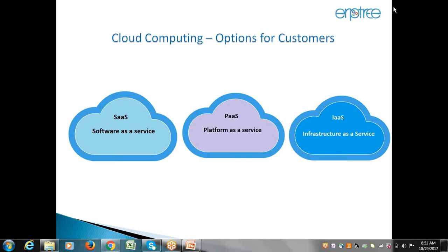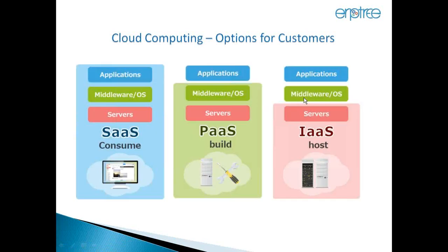To summarize: SaaS allows only report customizations and third-party integrations; functionality customizations are not allowed. PaaS allows functional customizations. IaaS works like PaaS but additionally allows installation of third-party applications into the same server. In SaaS, Oracle DBAs manage all database activities — anything you would previously request from your own DBA must now be requested from Oracle. We will discuss more detail in subsequent sessions.